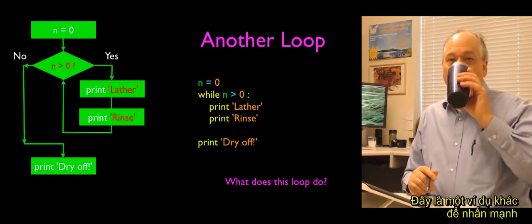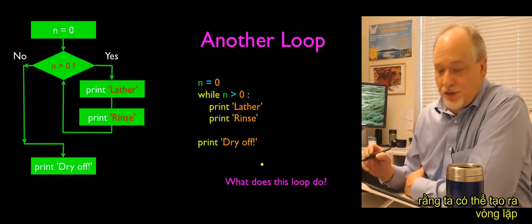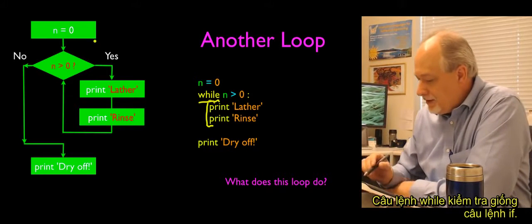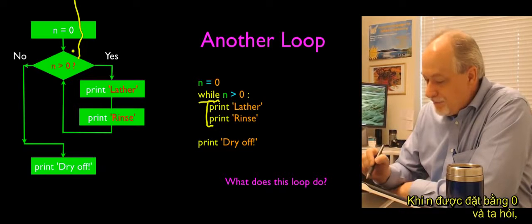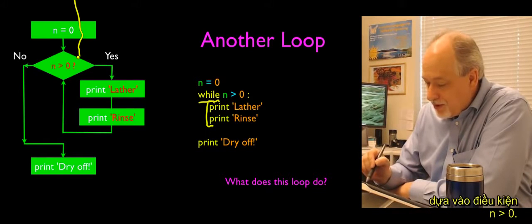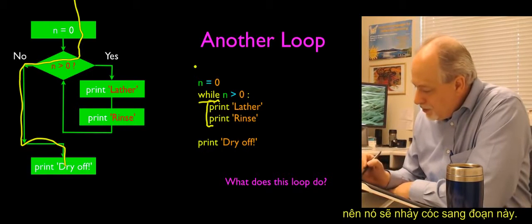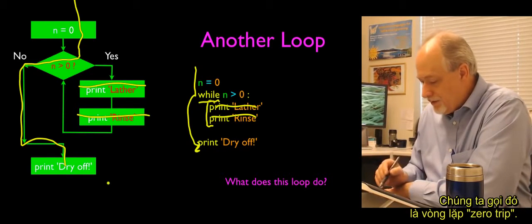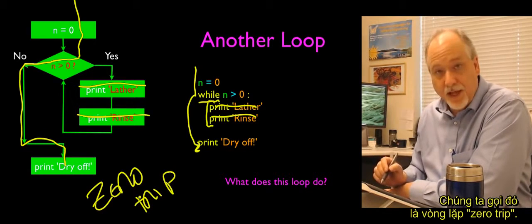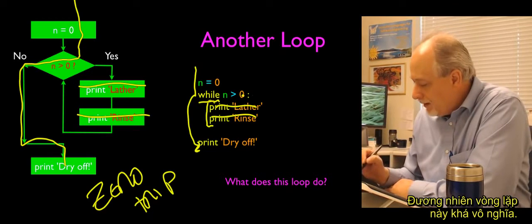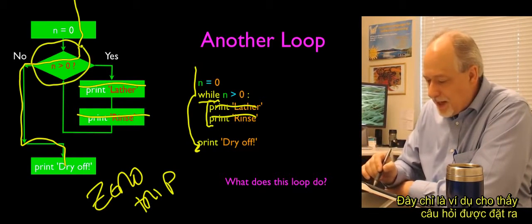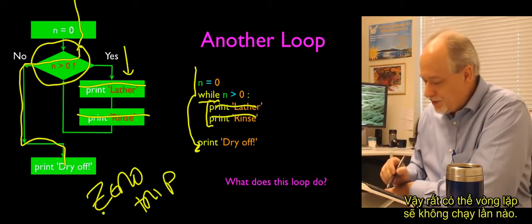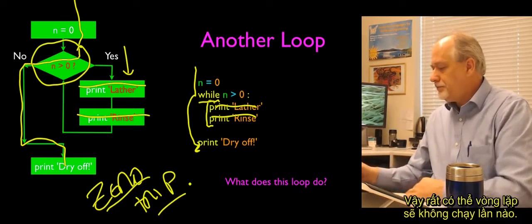Here's another loop to show that it's possible to structure loops in a way that they never run. The while functions like an if. When n is set to 0 and we ask 'n greater than 0,' it is literally false, so it goes right past it and never runs those lines of code. We call this a zero-trip loop, and that's OK. It shows that the test is above the body of the loop, and if it's false, the loop never runs.